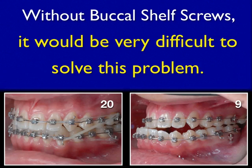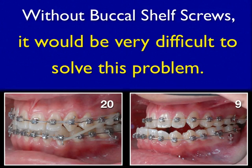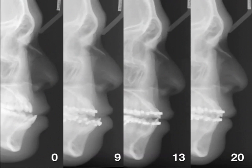To conclude this case: without the buccal shelf mini-screw, it would have been very difficult to solve this problem. The key lesson is — if the profile is good, place a mini-screw in the buccal shelf. You will be able to move the whole dentition 7mm backward.